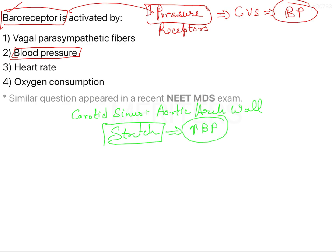Whenever there is an increase in blood pressure, it travels through the blood vessels, and the carotid sinus and the aortic arch wall are of course part of those blood vessels. Since BP increases, the carotid sinus and aortic arch wall also get stretched, and due to the stretching of these baroreceptors, there will be stimulation.